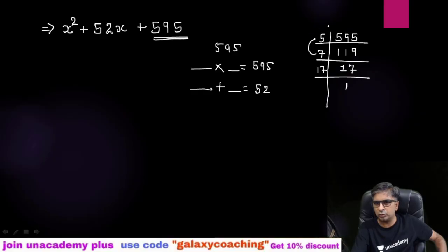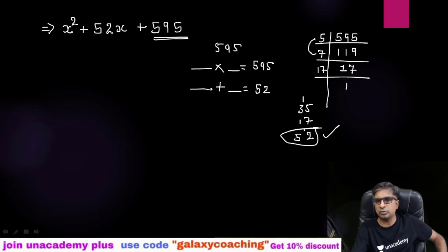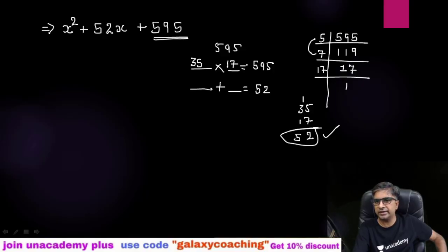From these prime factors, we need to find two numbers that multiply to give 595 and add to give 52. Let's try: 7 × 5 = 35, and the remaining factor is 17. So 35 × 17 = 595, and 35 + 17 = 52. These are our two factors.